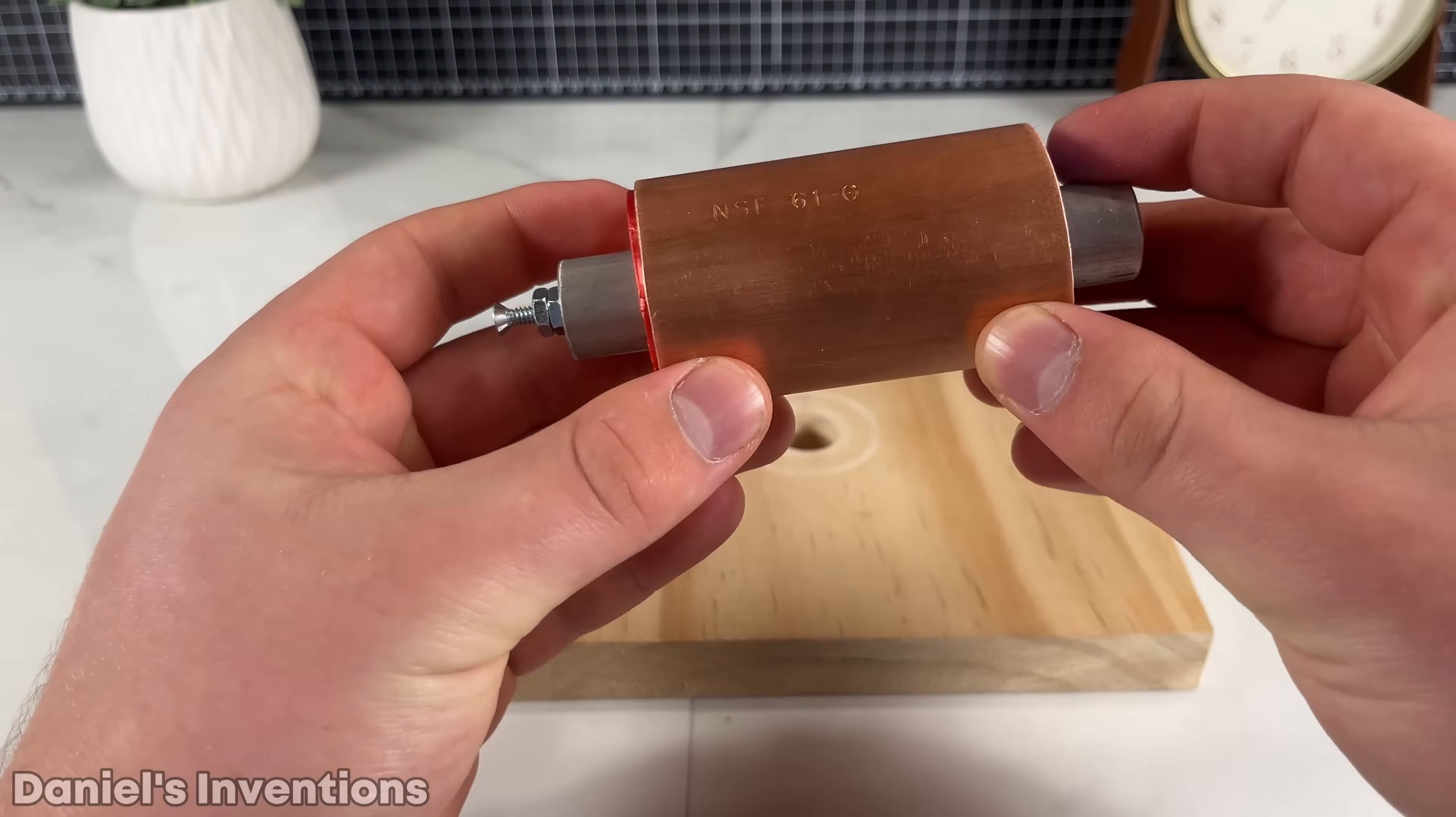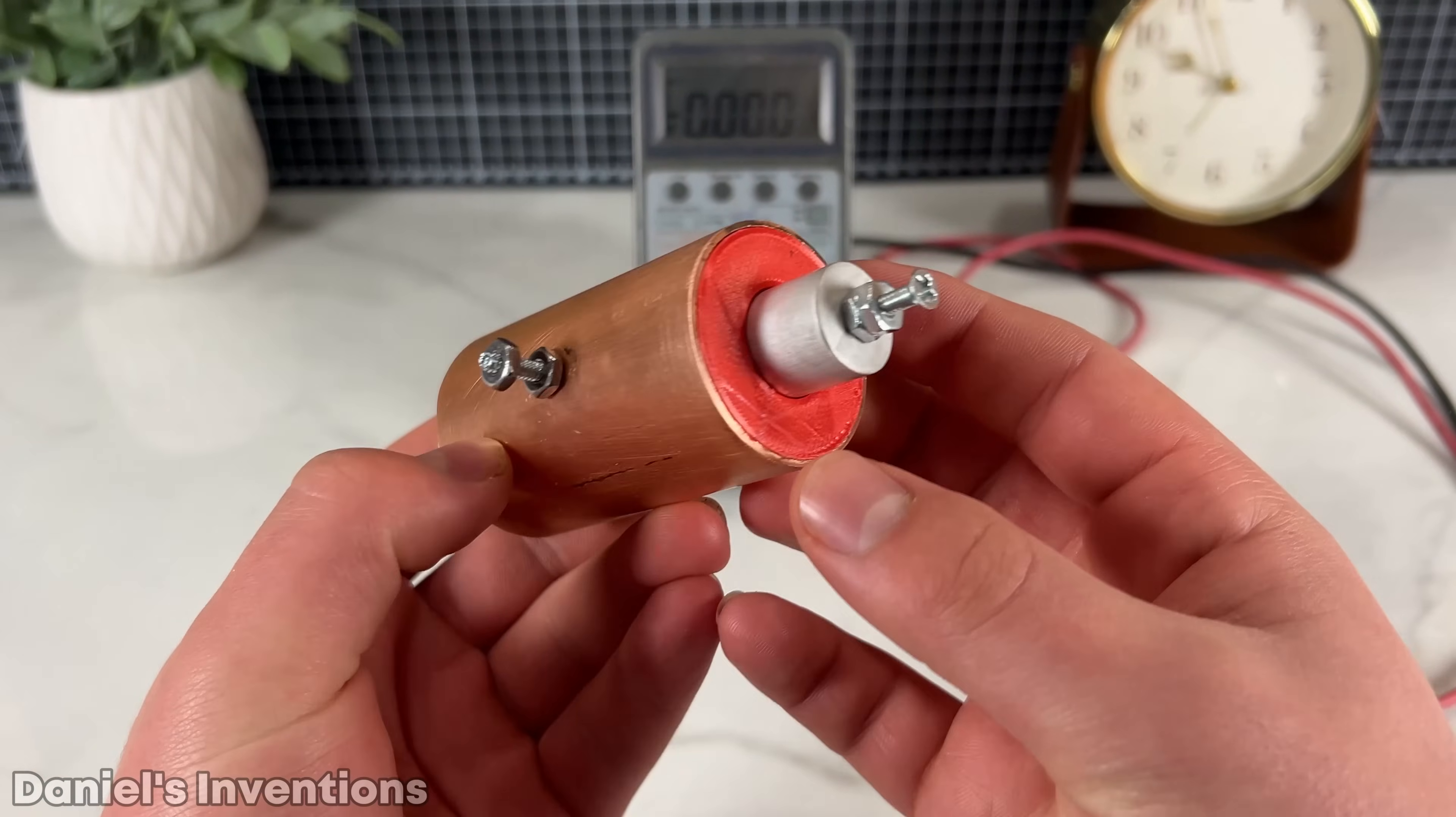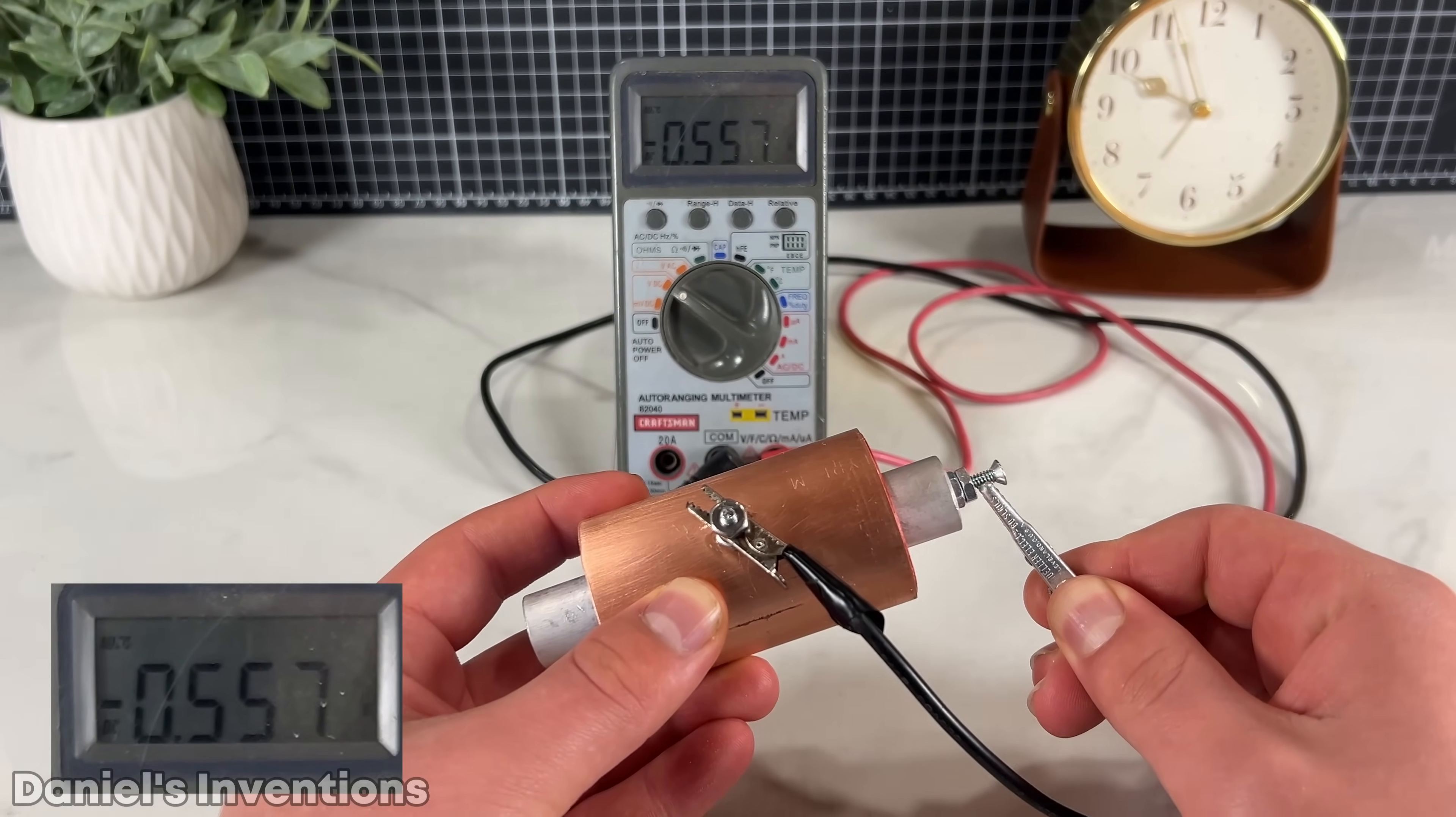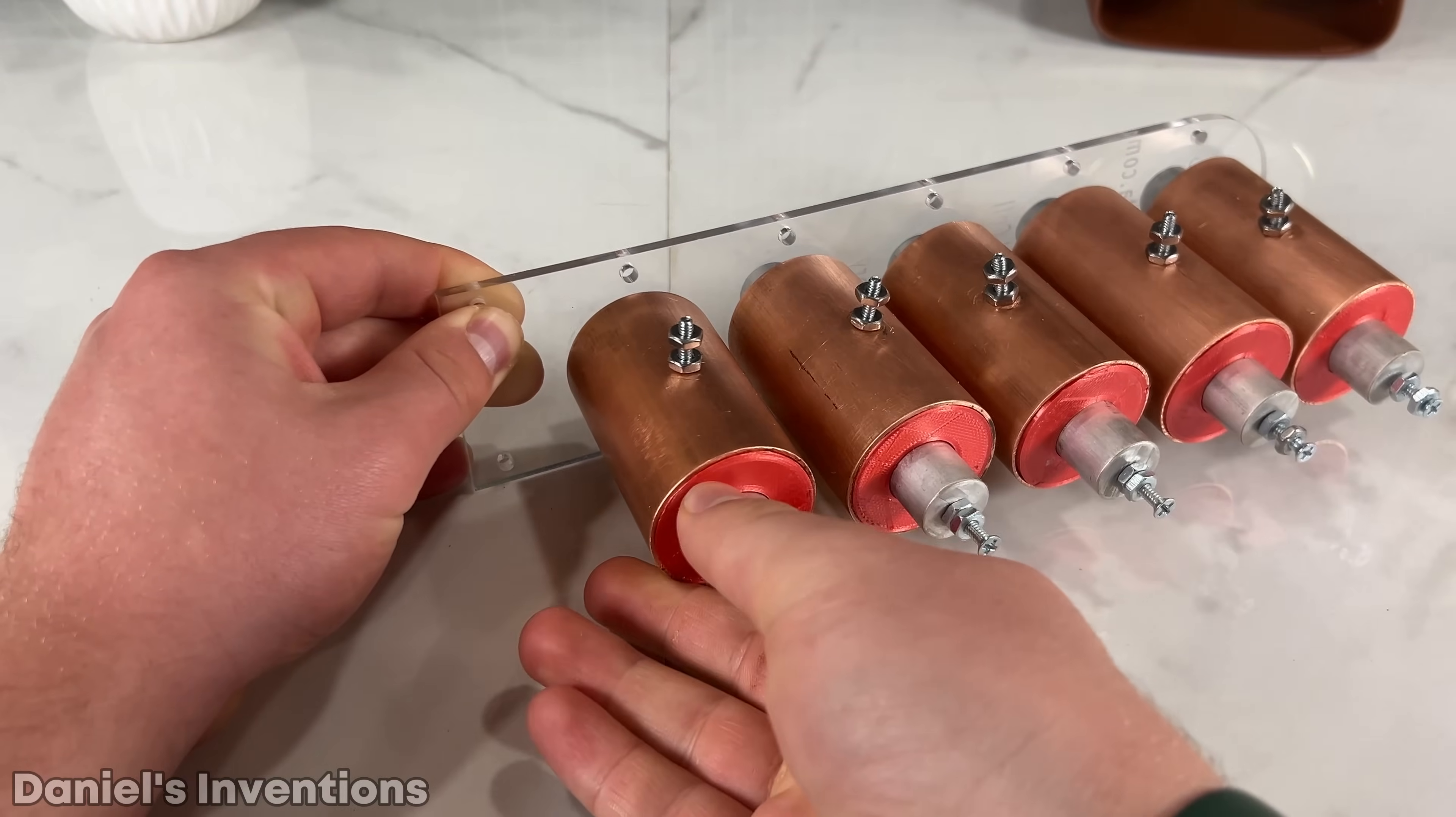Finally, the first crystal cell is finished, I just need to make four more the same way. It looks like the first battery cell generates around 1.4 volts DC. The rest of the crystal cells are finished and it is time to put them all together.